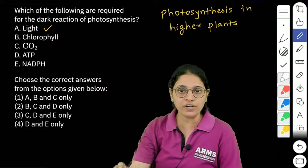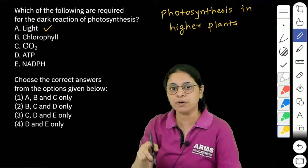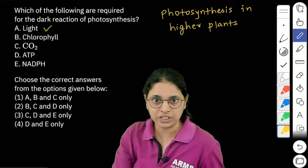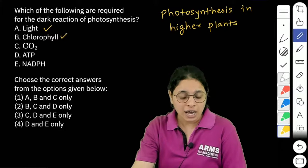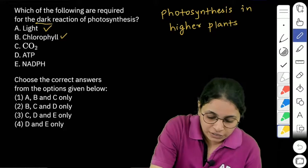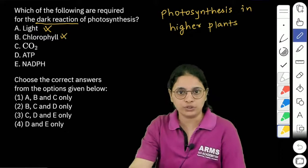Next we have chlorophyll. Chlorophyll is also involved in the light reactions. Chlorophyll is responsible to absorb the light energy. So chlorophyll is also involved in the light reactions, but we are asked which is involved in dark reactions. So obviously we have to remove these two.